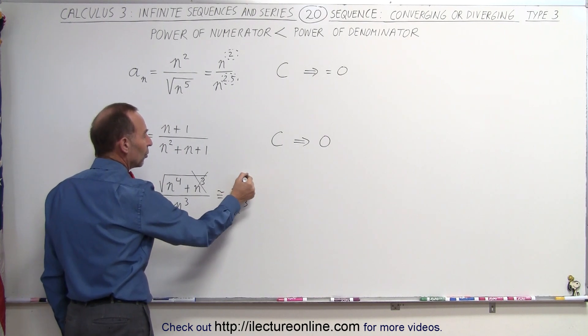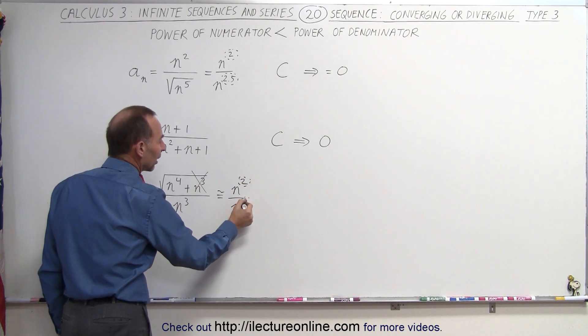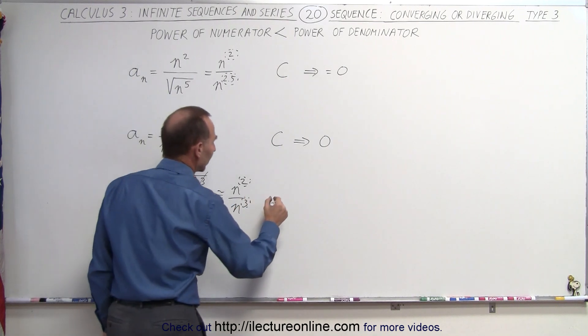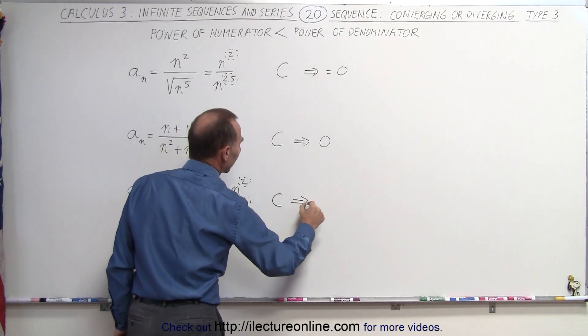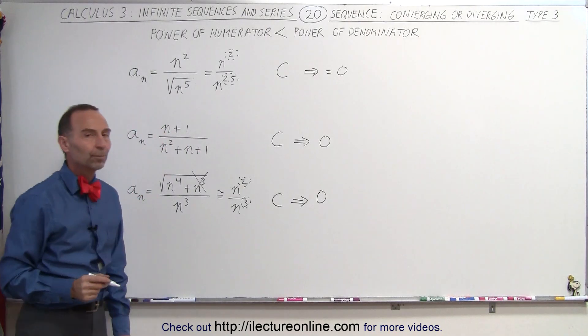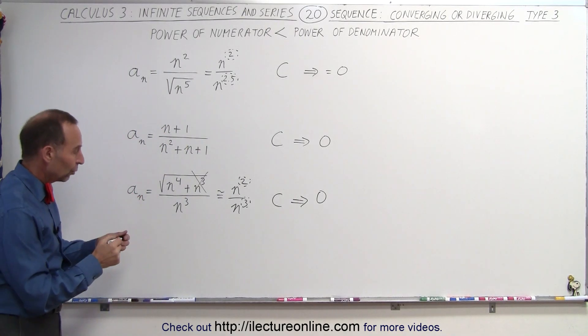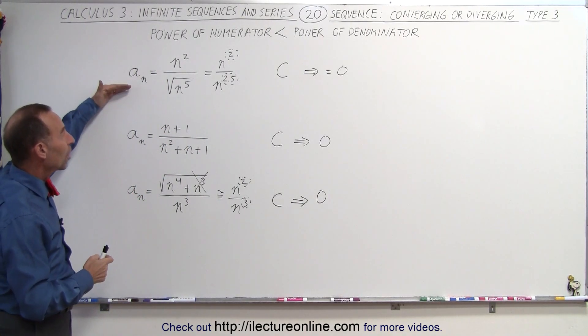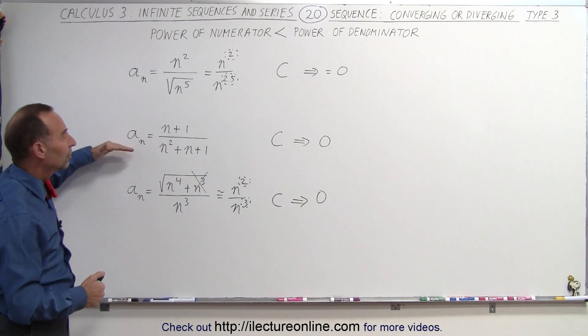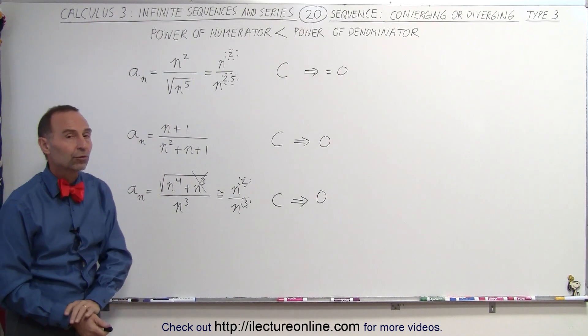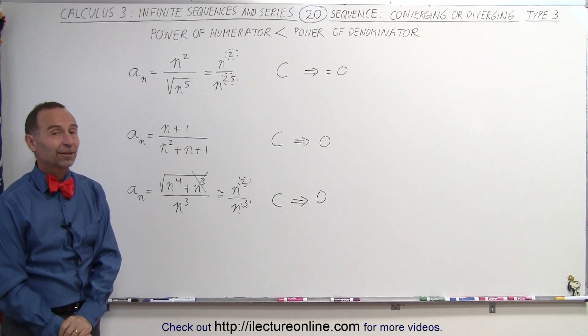Since this exponent is smaller than this exponent right here, we can say that it will converge, and in the end, it will converge to the number zero. So, if we have the case where the exponent in the numerator is smaller than the exponent in the denominator, the sequence will always converge, and it will always converge to zero. And that's how it's done.